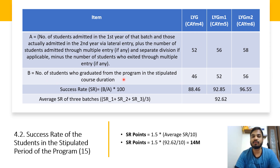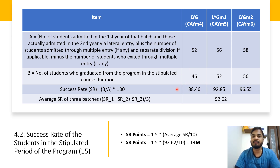Variable B is the number of students who graduated from the program within the stipulated course duration — for a four-year B program, those who graduated in exactly four years without any regular backlogs or withheld results. I have taken B as 46, with A as 52. Using the formula Success Rate = B / A × 100, this gives 88.46%. For LYG M1, with 56 students total and 52 passed, the success rate is 92.85%.